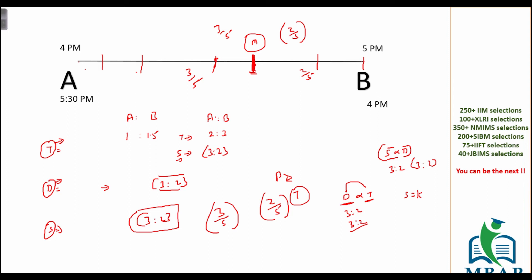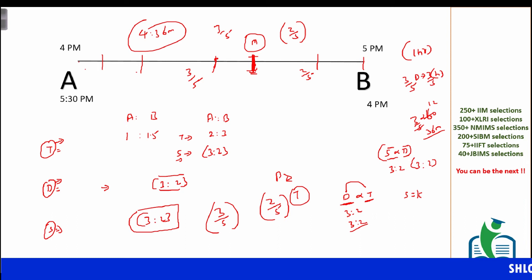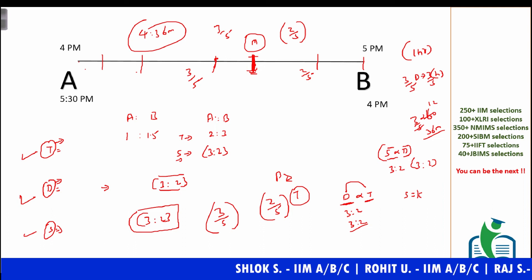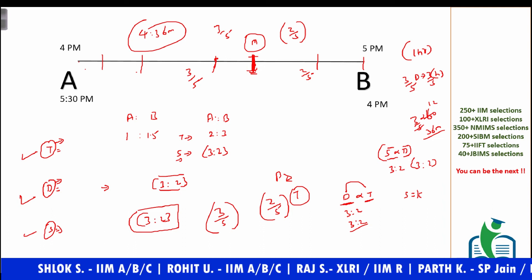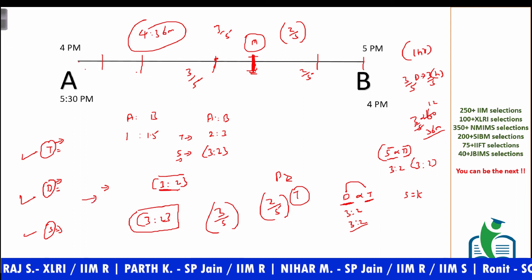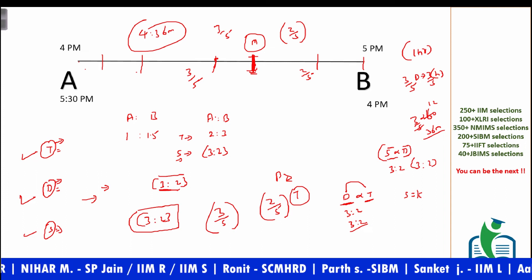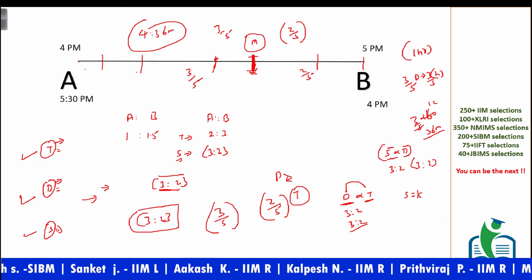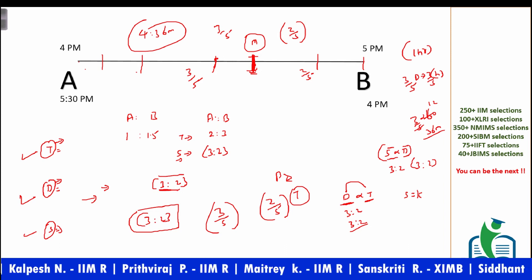The overall distance covered by A is completed in one hour, which is 60 minutes. But we need to cover only three-fifths of the overall distance, so three-fifths of the whole time — three-fifths of 60 minutes — equals 36 minutes. This means the meeting point will happen at 4 hours and 36 minutes, that is, 4:36 PM. You can actually get the answer from step two alone since distance is directly proportional to time.